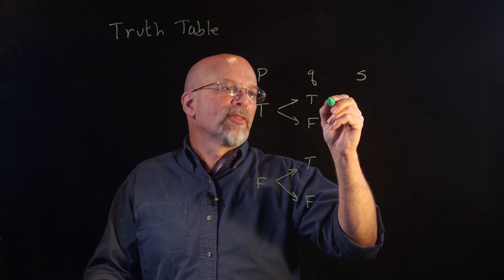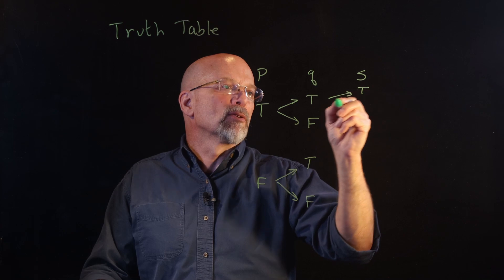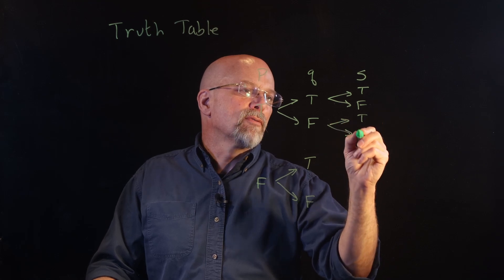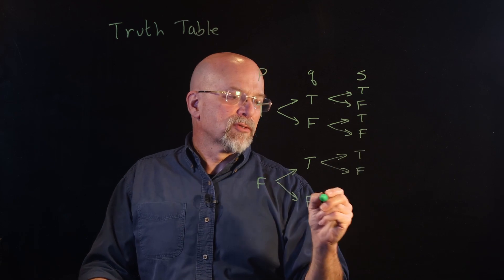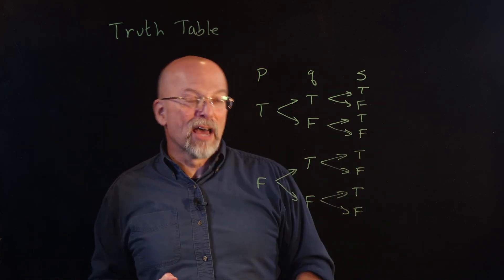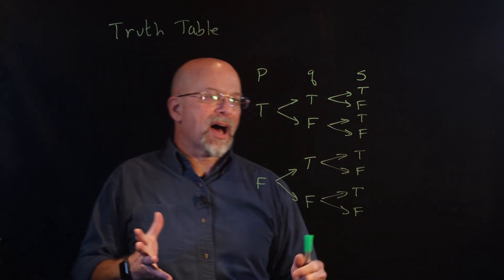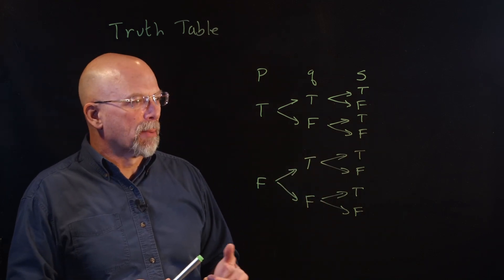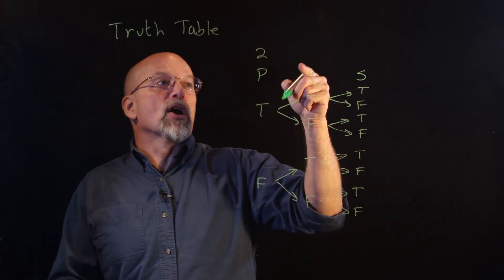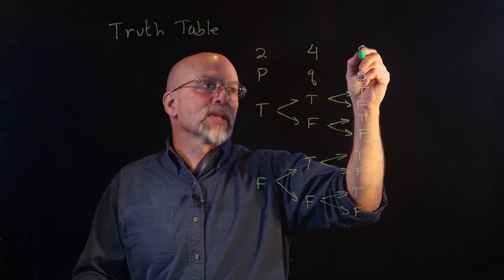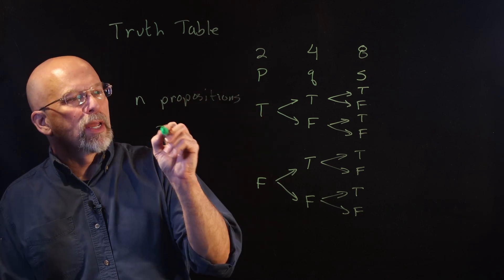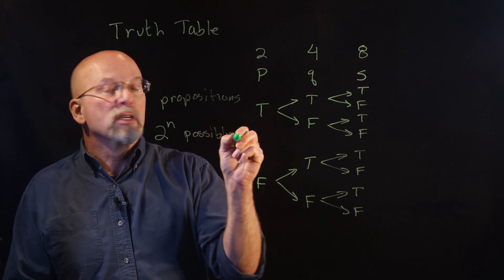If we add S, then whenever both P and Q are true, S can be true or false; whenever P is true and Q is false, S can be true or false — and the same for the other two combinations of P and Q. Notice that every time we add another proposition, we double the number of possible combinations. One element gives two combinations, two elements gives four, three elements gives eight. This means that if we have N propositions, we have 2^N possible combinations.